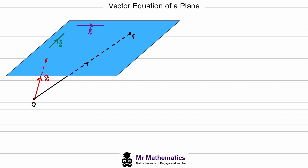These two direction vectors cannot be parallel to each other. To go from a to r, we can use a combination of these two direction vectors — for example, two lots of s and two lots of t. So for this general point r, we would say r equals the position vector a, plus two lots of direction vector s, plus two lots of direction vector t.